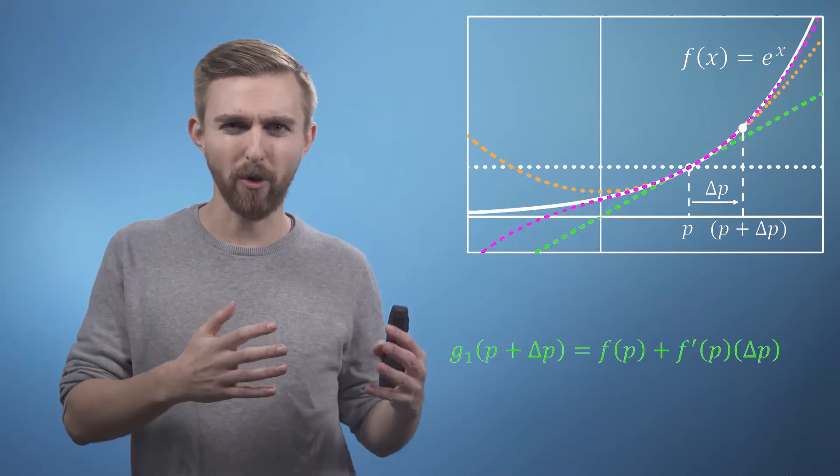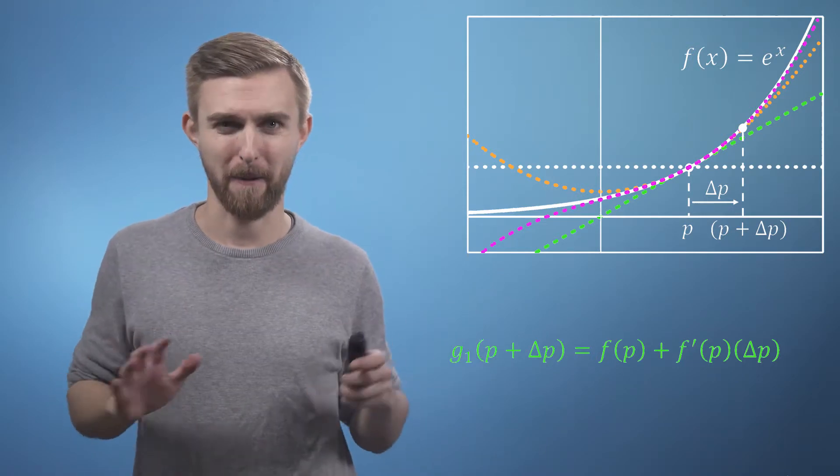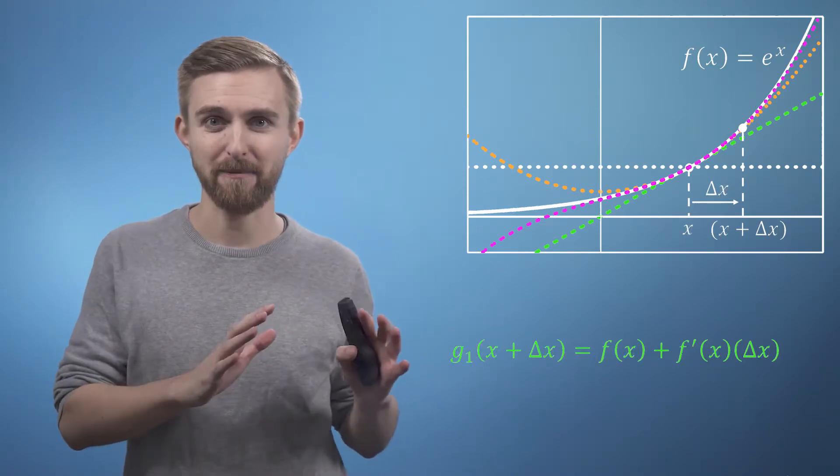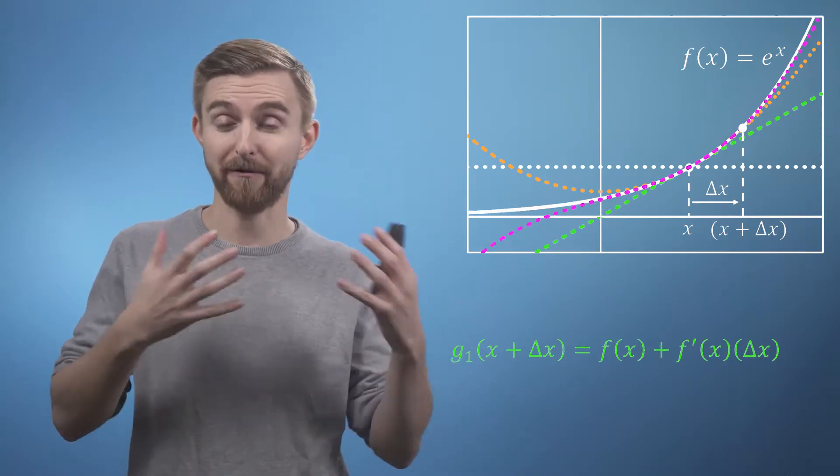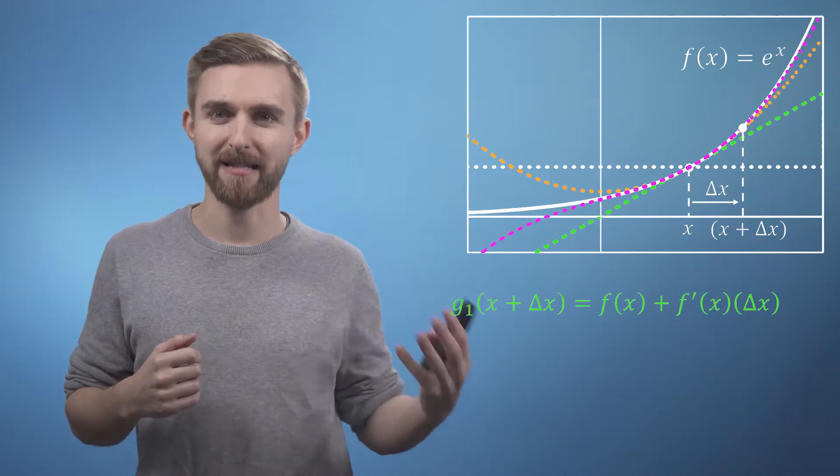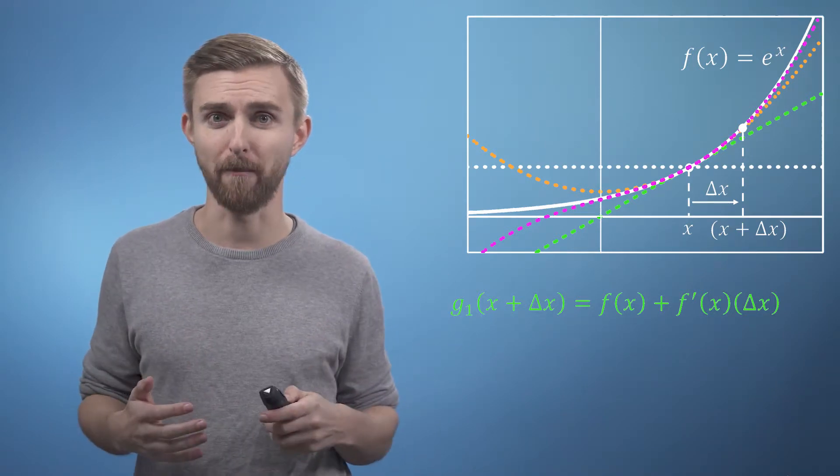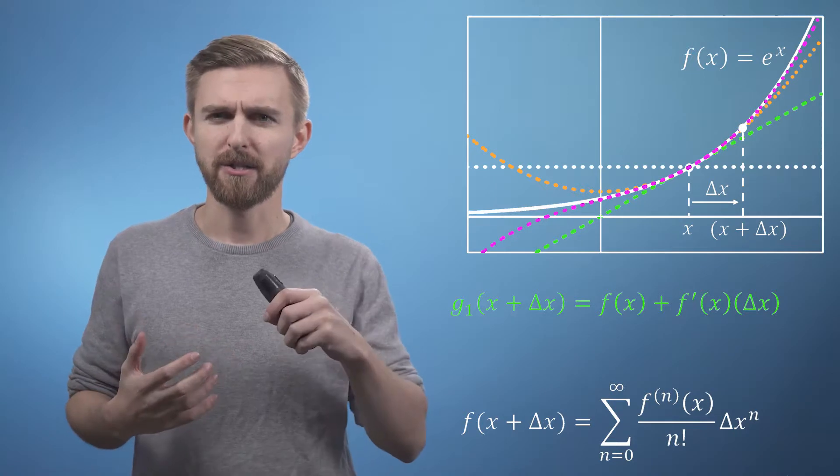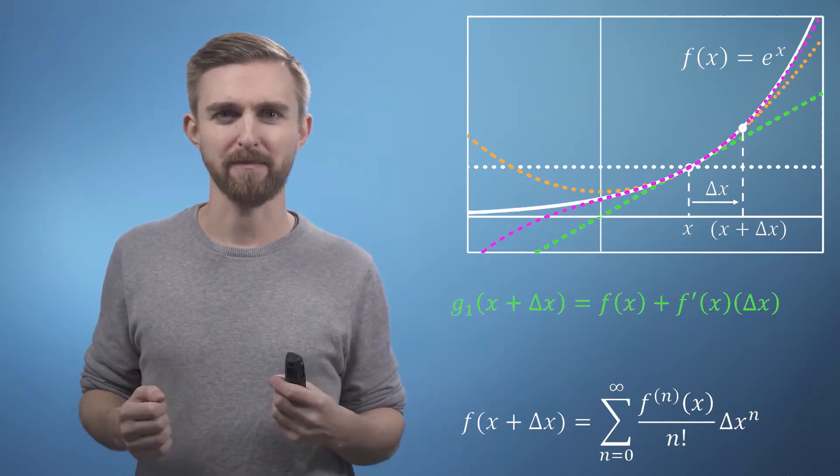I'm going to do it all at once to make it as painless as possible. I haven't changed anything conceptually—I've just written an x everywhere where we used to have a p. We can now also rewrite our Taylor series expression in this new form with just x and delta x. So we're in good shape to talk about approximations.